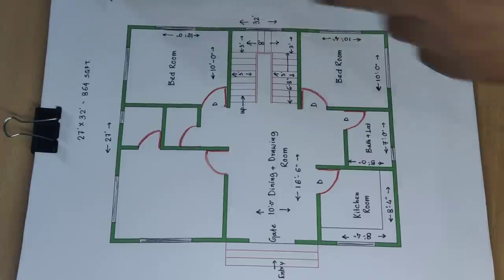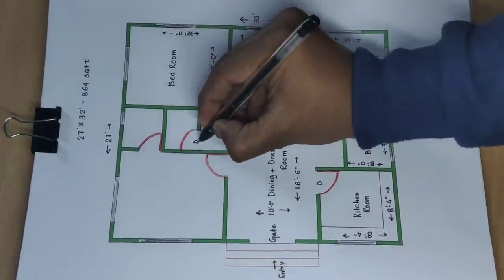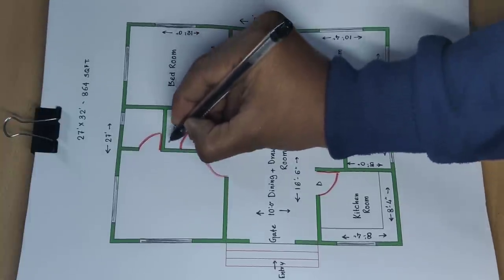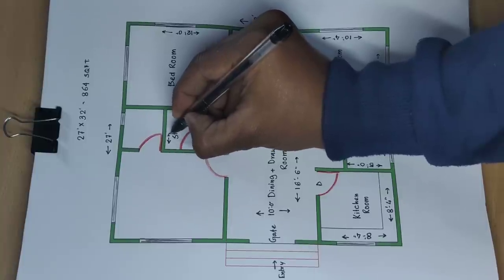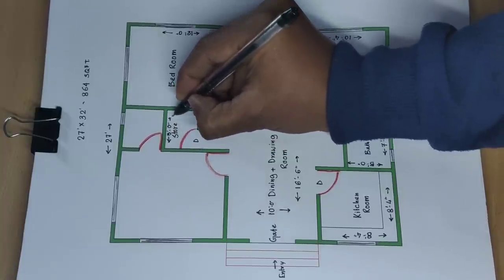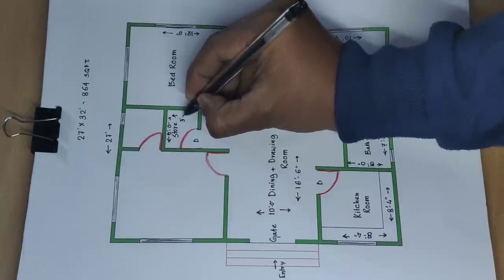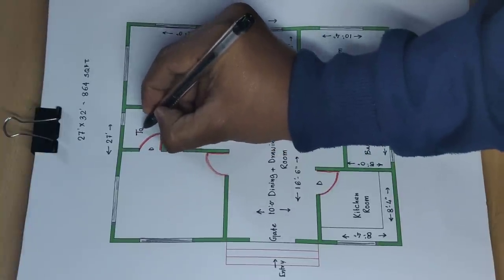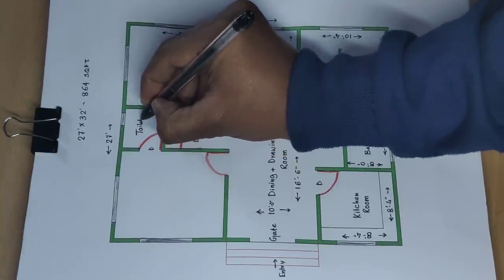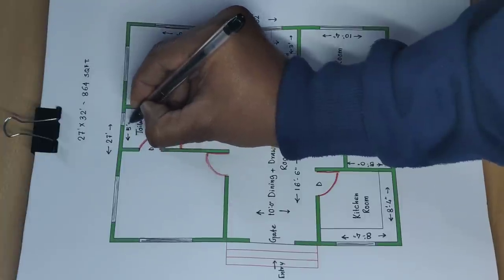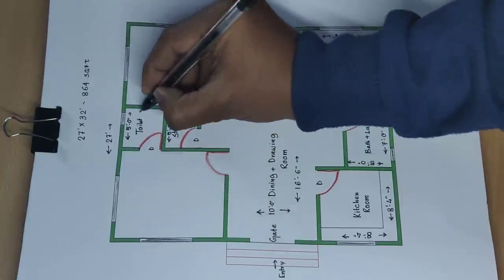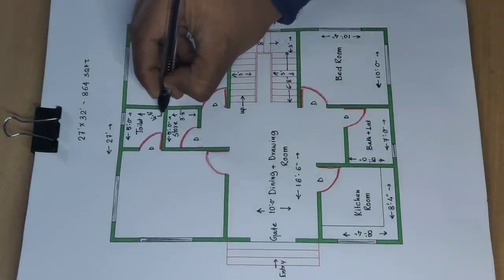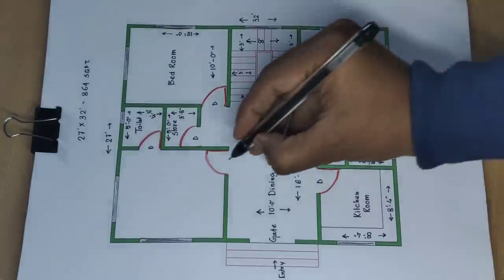Second bedroom is 12 feet this side. This is the storeroom — 5 feet 0 inches and 3 feet 8 inches. This is an attached toilet — distance 5 feet 0 inches and 4 feet 6 inches this side.